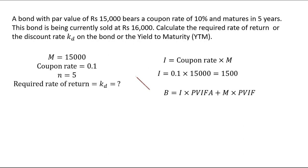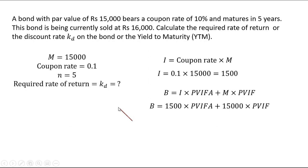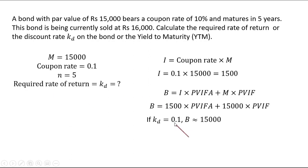We need to find PVIFA and PVIF, but we don't know the required rate of return to look these up. However, we know that if the discount rate KD equals the coupon rate of 10%, then the value of the bond should be 15,000 rupees. Looking at Table 4, intersecting 5 years and 10%, we get PVIFA of 3.790787. But remember — for neither profit nor loss the present value should be 16,000, since that's what I'm paying. At 10%, the bond value comes to only 15,000, not 16,000, so the required rate of return should be less than 10%.